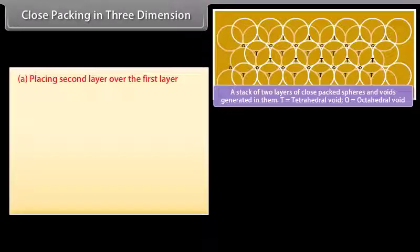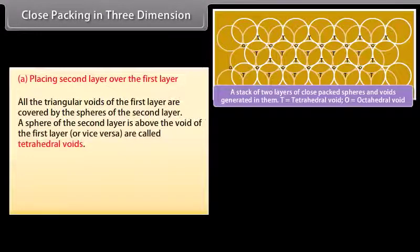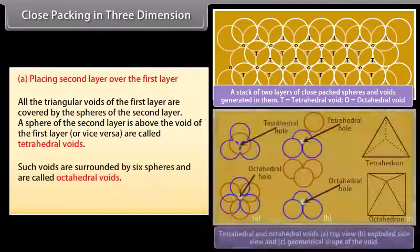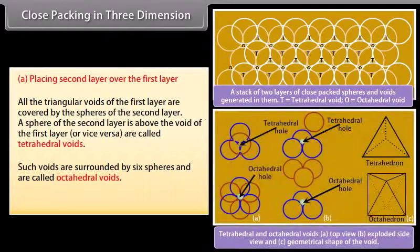Placing the second layer over the first layer: all the triangular voids of the first layer are covered by the spheres of the second layer. A sphere of the second layer above the void of the first layer, or vice versa, are called tetrahedral voids. Such voids surrounded by six spheres are called octahedral voids.